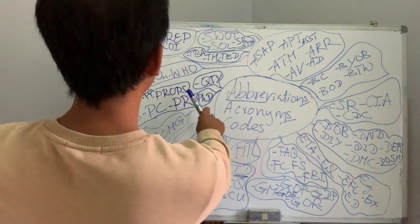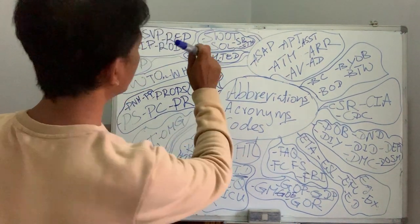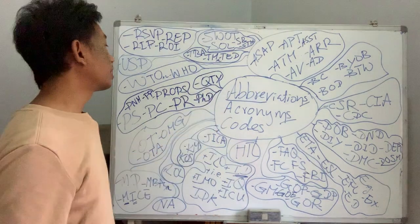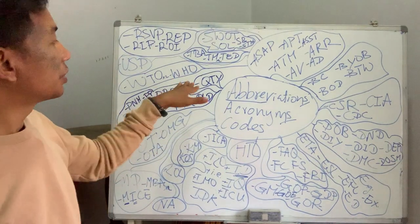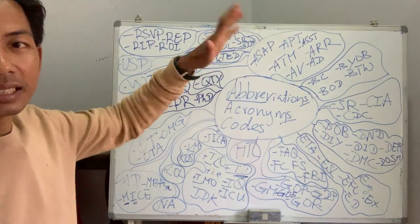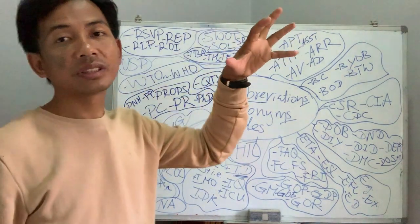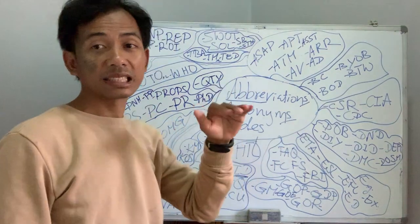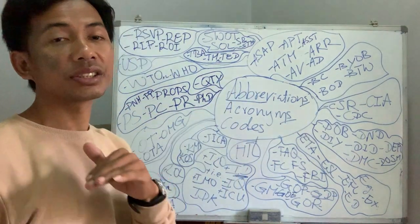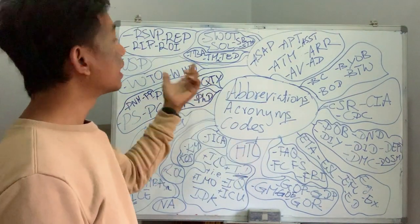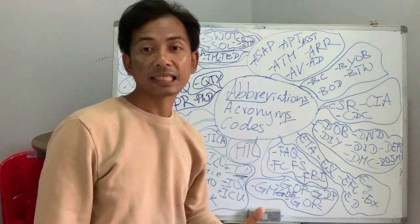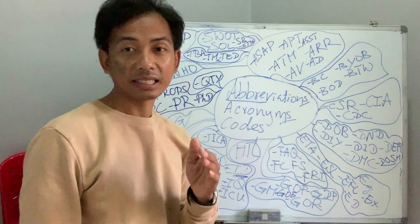Q — just one: QTY. If you go on an invoice or a bill, you always see QTY. That stands for quantity — a number.